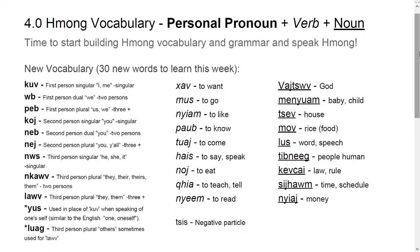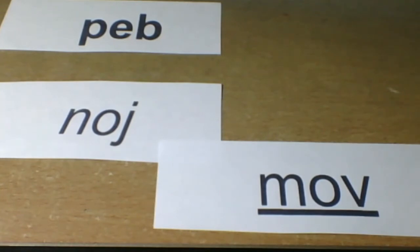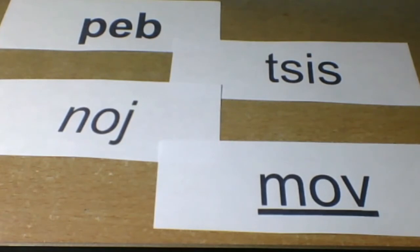Let's make some sentences. Personal pronouns are in bold, verbs are in italics, and nouns are underlined. The sentence is: 'bē, nā, mā' — we eat food, or we eat rice. And you can add the negative particle to make it negative: 'bē, ji, nā, mā' — we don't eat rice, we don't eat food.